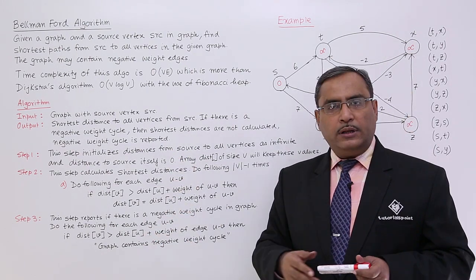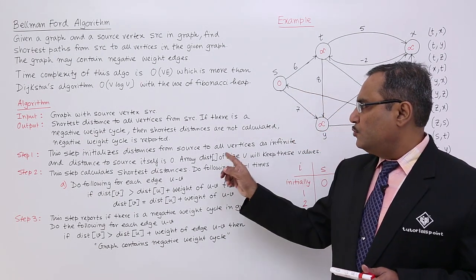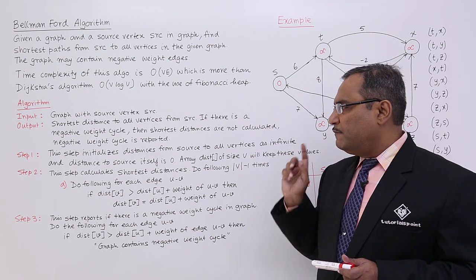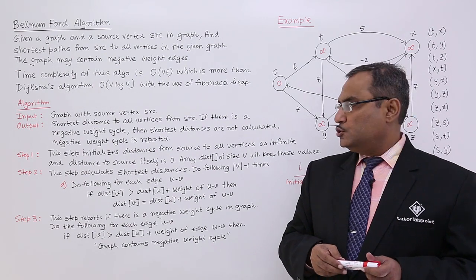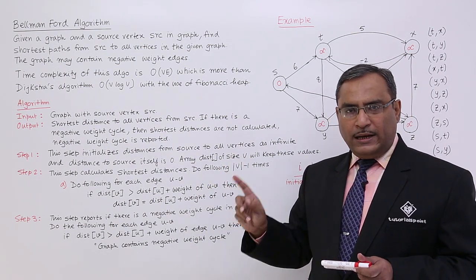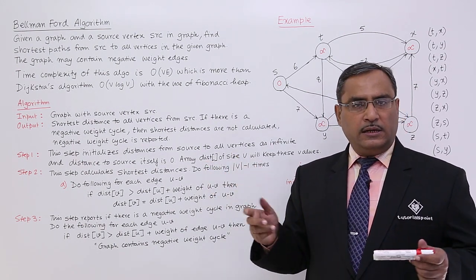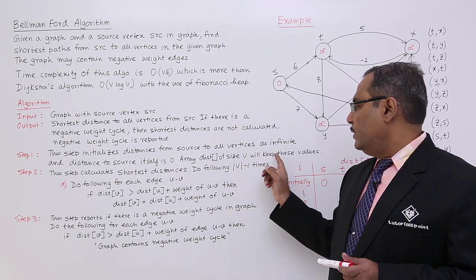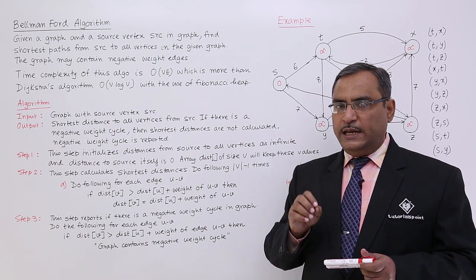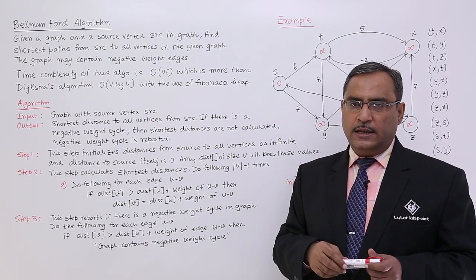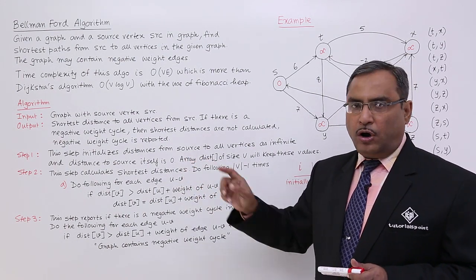The algorithm is divided into 3 steps. Step 1 initializes the distance from the source to all other vertices as infinite, and the distance to the source itself is 0. A one-dimensional array called dist of size V is used, initialized to 0 at the source vertex and infinity for all other remaining vertices.